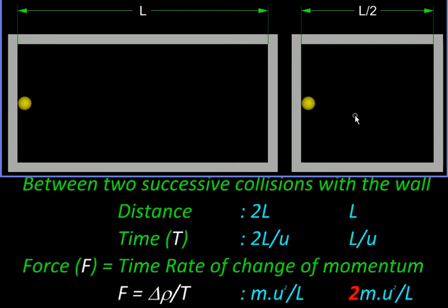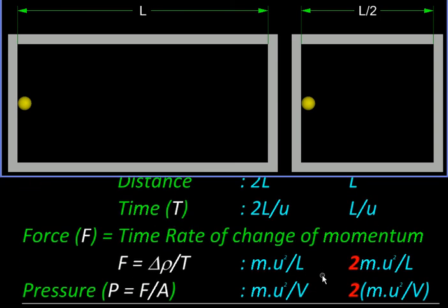And therefore the rate of change of momentum, which is defined as force by Newton's law, over here will be twice. So this twice the force is acting on the same area and therefore it will produce double the pressure. So here we reduced the volume to half and the pressure got doubled, something predicted by Boyle's law.